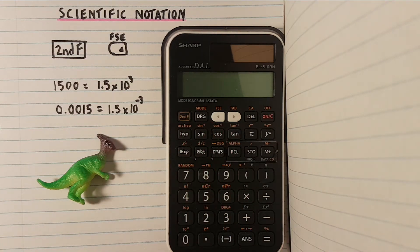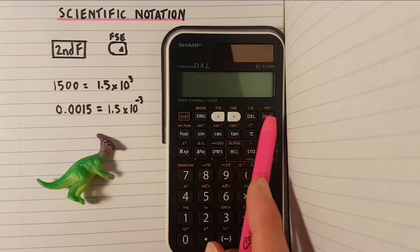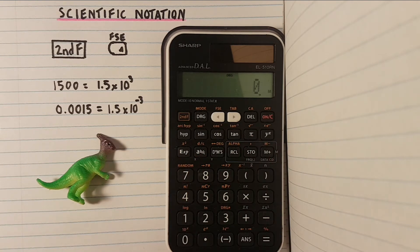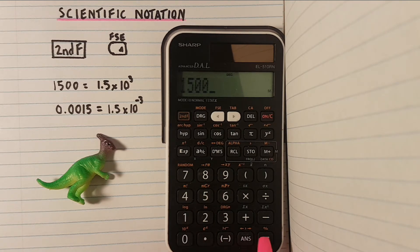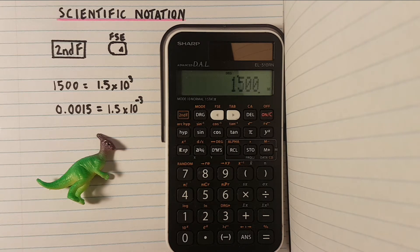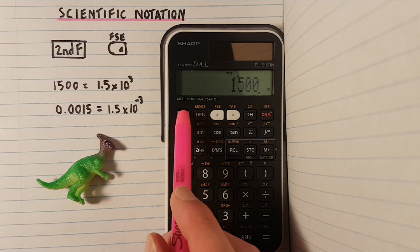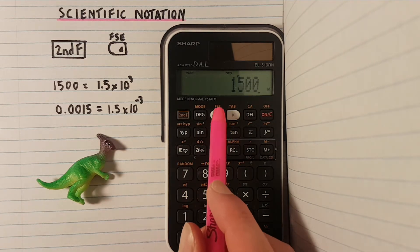So if we start off in regular mode and place a number on the screen, let's use 1500. Now let's hit the second function key, left arrow.